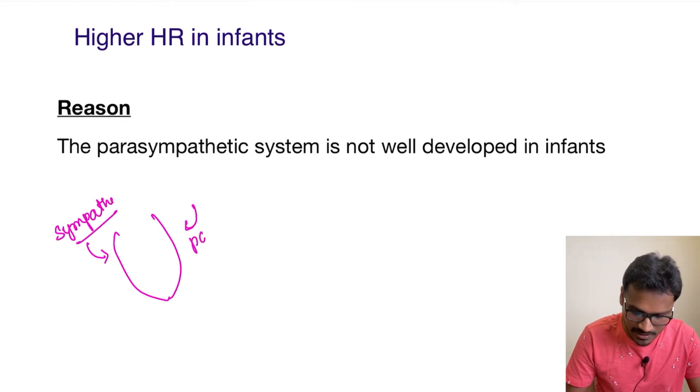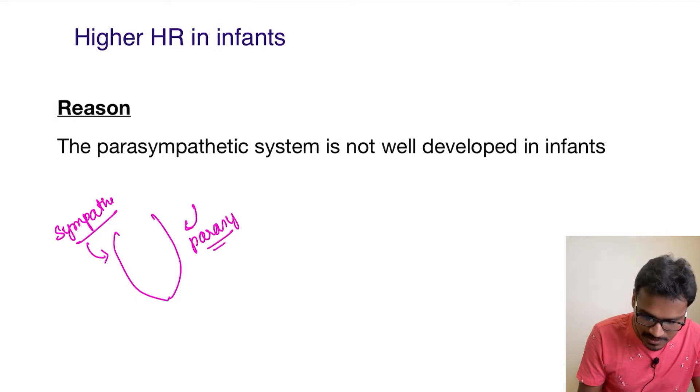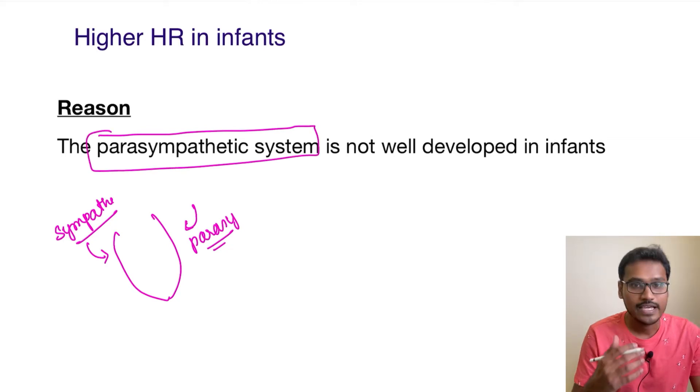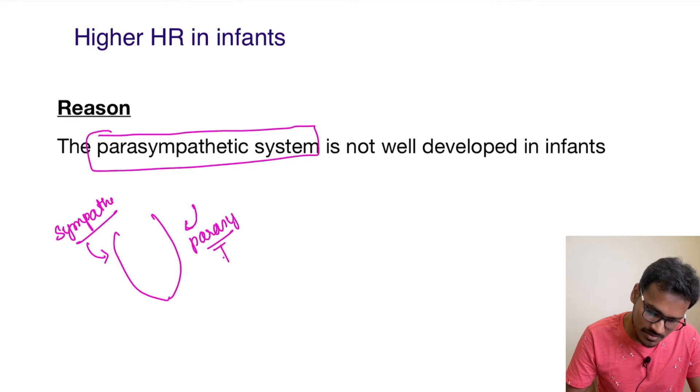In infants, the major problem is with the parasympathetic system. This parasympathetic system is not very well developed in infants. This parasympathetic system is the one which controls the heart rate and decreases the heart rate.